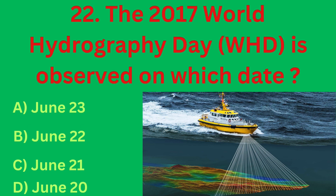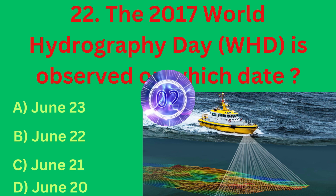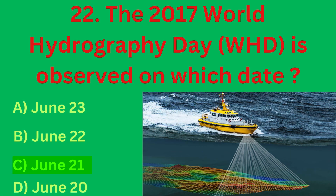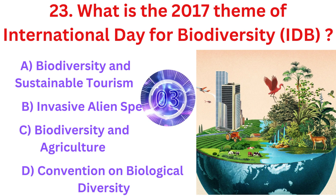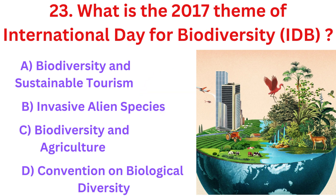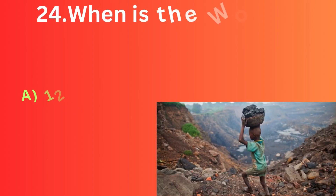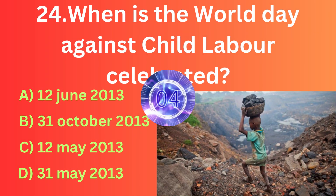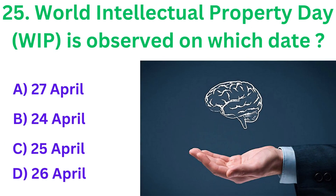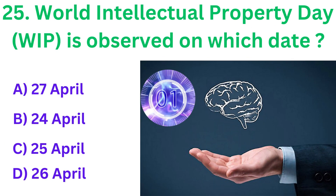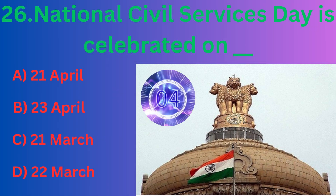The 2017 World Hydrography Day is observed on which date? The correct answer is option C, 21 June. What is the 2017 theme of International Day for Biodiversity? The correct answer is option A, Biodiversity and Sustainable Tourism. When is the World Day against Child Labour celebrated? The correct answer is option A, 12 June 2013. World Intellectual Property Day is observed on which date? The correct answer is option D, 26 April.